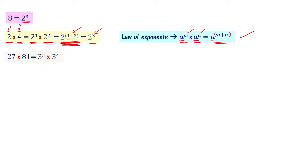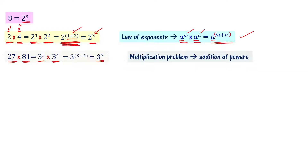For example, 27 times 81 can be written as 3 cube times 3 power 4, giving us 3 power 3 plus 4, which equals 3 power 7. Notice that a multiplication problem has become an addition of powers. Sometimes this makes calculations much faster, which is why we use exponentiation.